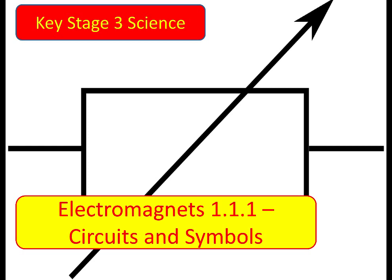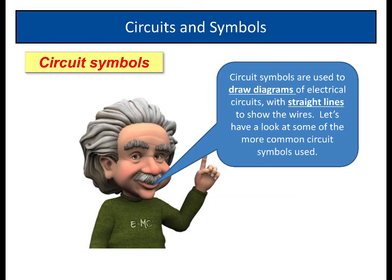Hello and welcome to this first video in the Key Stage 3 Science Electromagnets topic. In this one we're going to look at circuits and symbols. Now, circuit symbols are used to draw diagrams of electrical circuits. It's a very particular way of doing it and we use straight lines to show the wires that connect the components together. So first of all, let's have a look at some more common circuit symbols used.